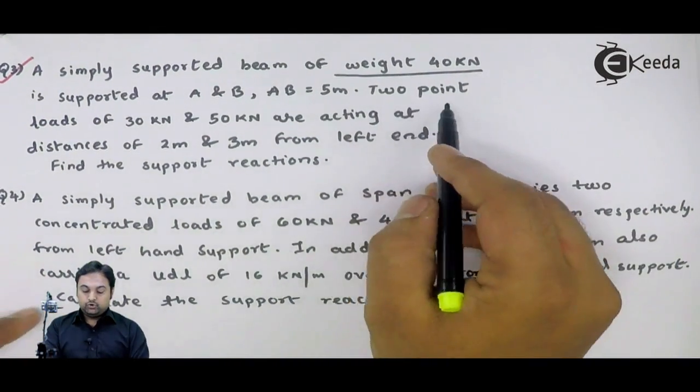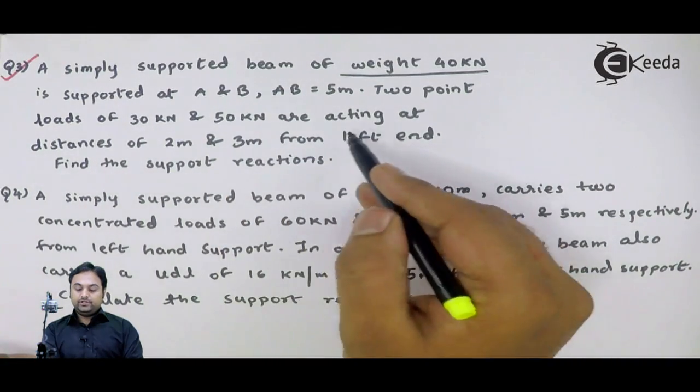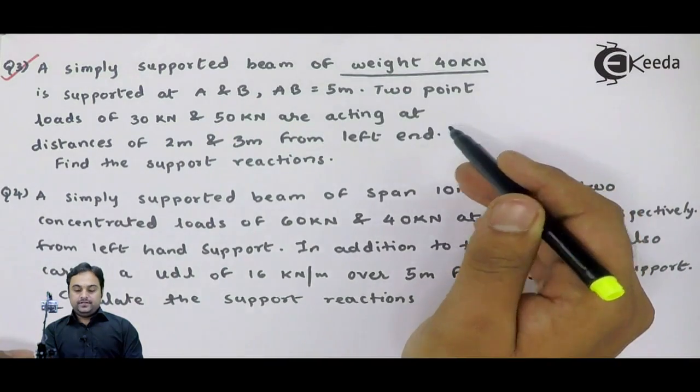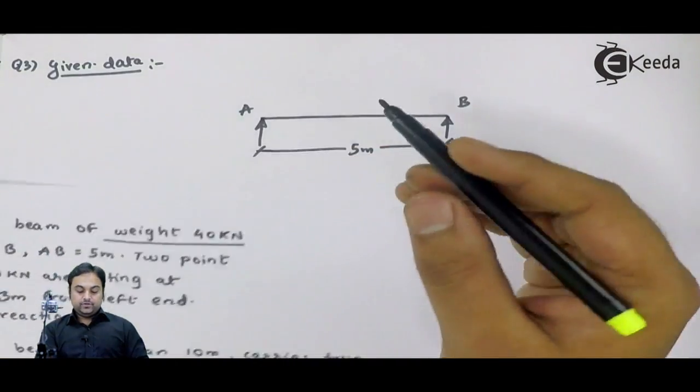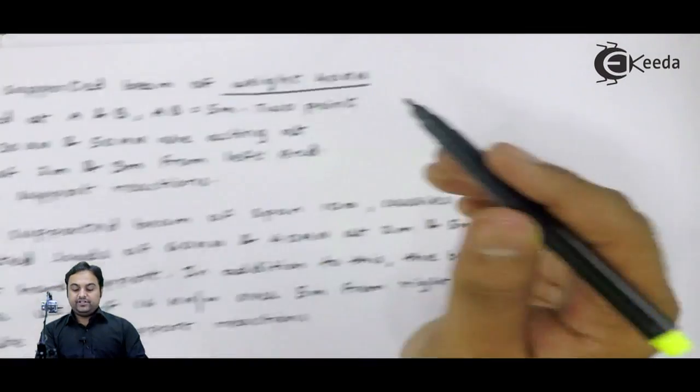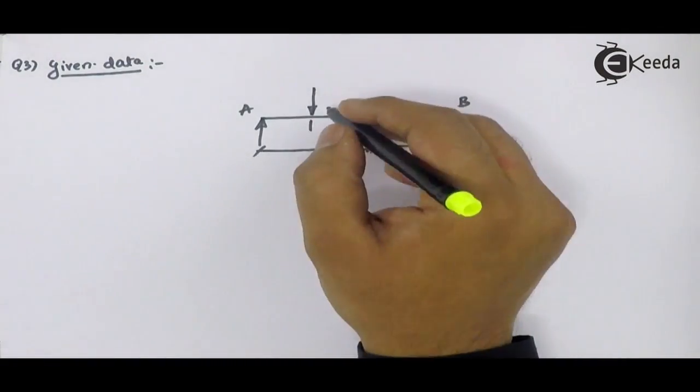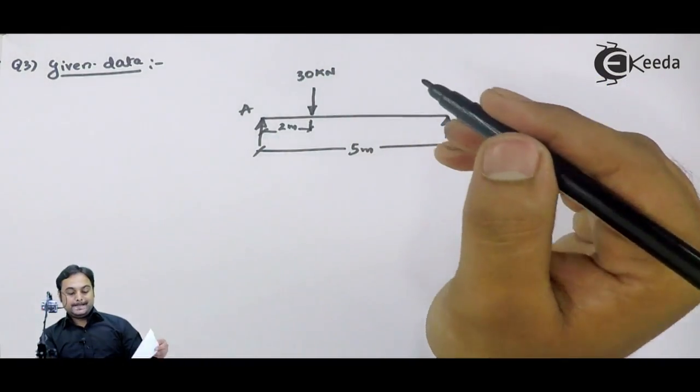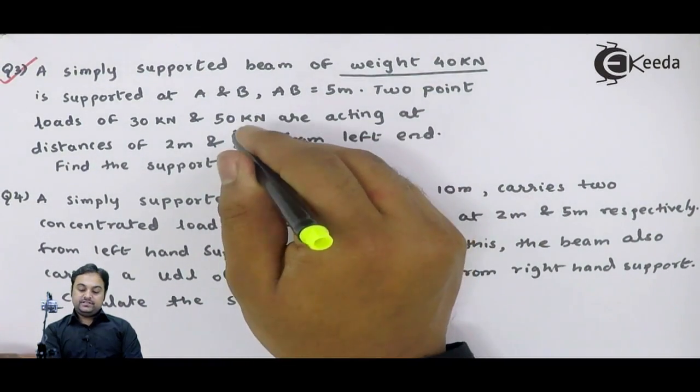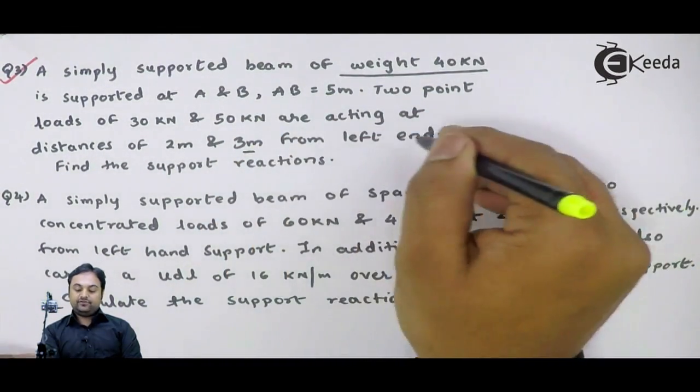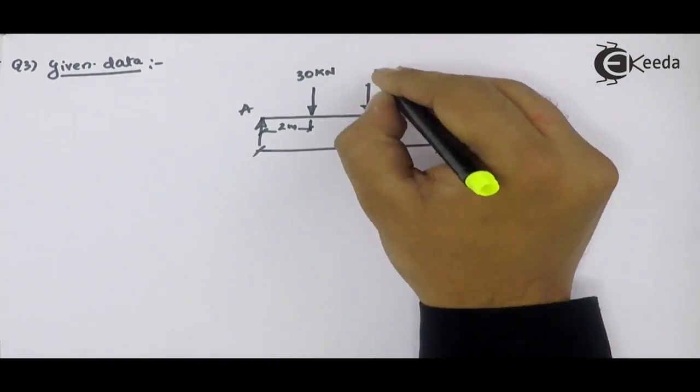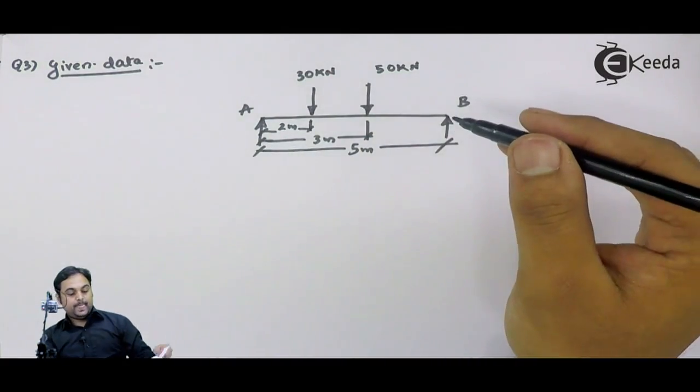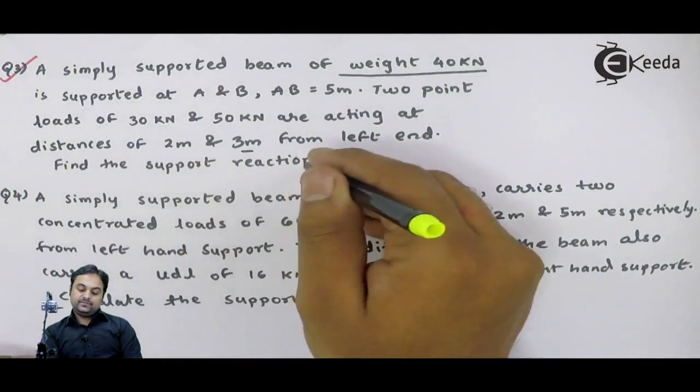Two point loads of 30 kN and 50 kN are acting at distances of 2 meters and 3 meters from left end. So at 2 meters from left end support, we have 30 kN load. Next, 50 kN is at 3 meters from left end. Now, this is the diagram which is given. They are asking us to find the support reactions.